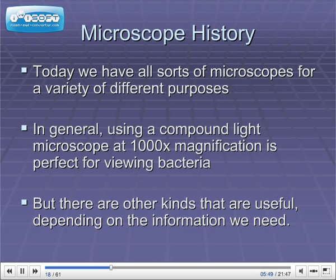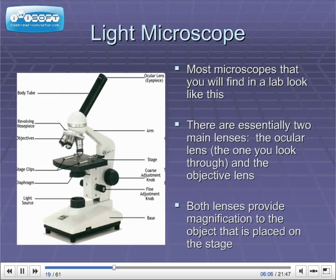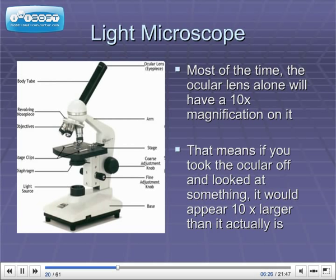Today we have all sorts of microscopes for a variety of different purposes. In general, using a compound light microscope at a thousand times magnification is perfect for viewing bacteria. But there are other kinds that are useful, depending on the information we need. Most microscopes that you will find in a lab look like this one. There are essentially two main lenses: the ocular lens, which is the one that you look through, and the objective lens, which is the one that's closer to the specimen. Both lenses provide magnification to the object that is placed on the stage. Most of the time, the ocular lens alone will have a 10x magnification, meaning the object appears ten times larger than it actually is.